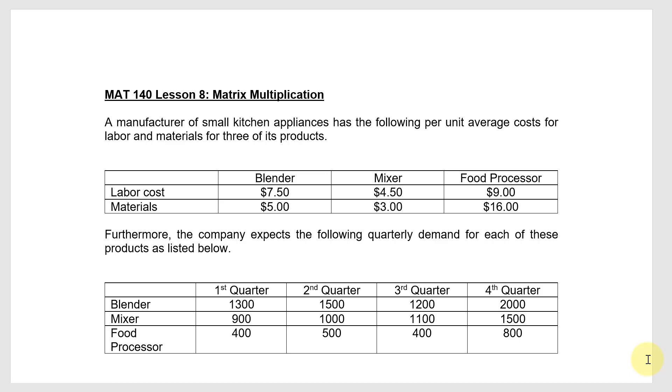So costs are given here in this table, labor costs on the top row, materials cost on the second row for three different products that the company produces.